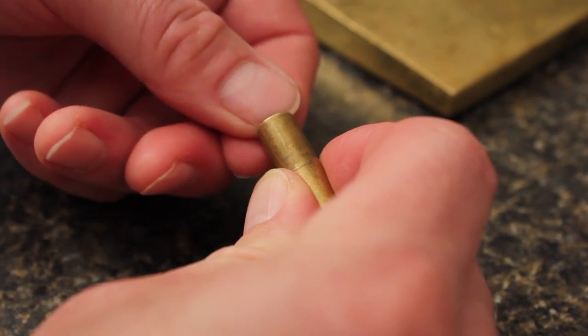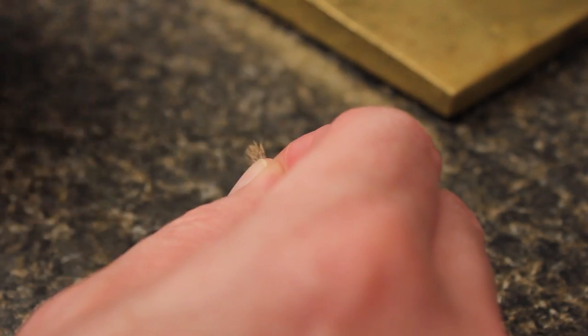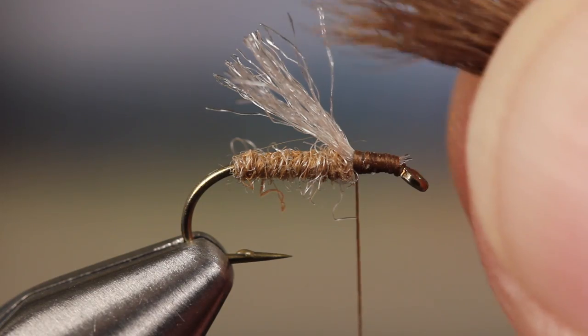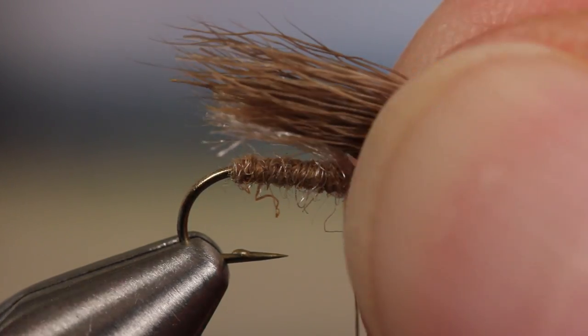Keeping the tips aligned, remove the caribou from the stacker and measure to form a wing just slightly longer than the underwing. Take a loose collecting wrap of tying thread around the hair and then pull straight up to compress the wrap. Take a few more firm turns to secure the hair to the top of the hook shank.